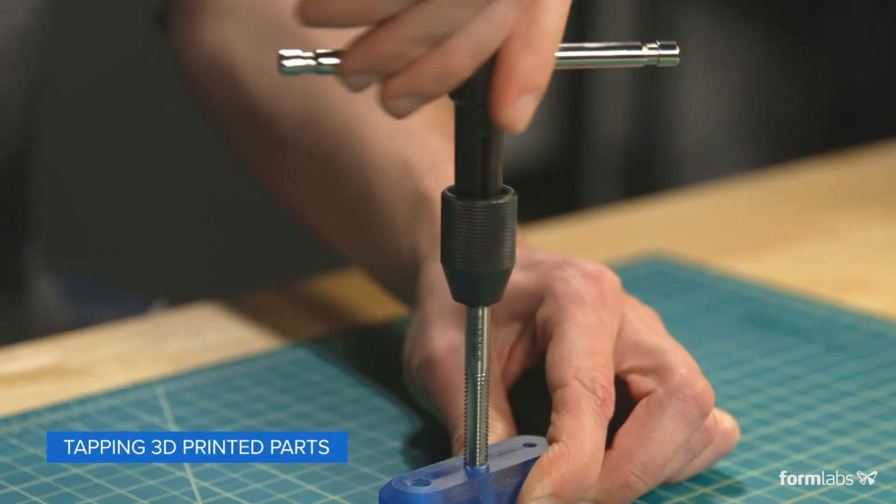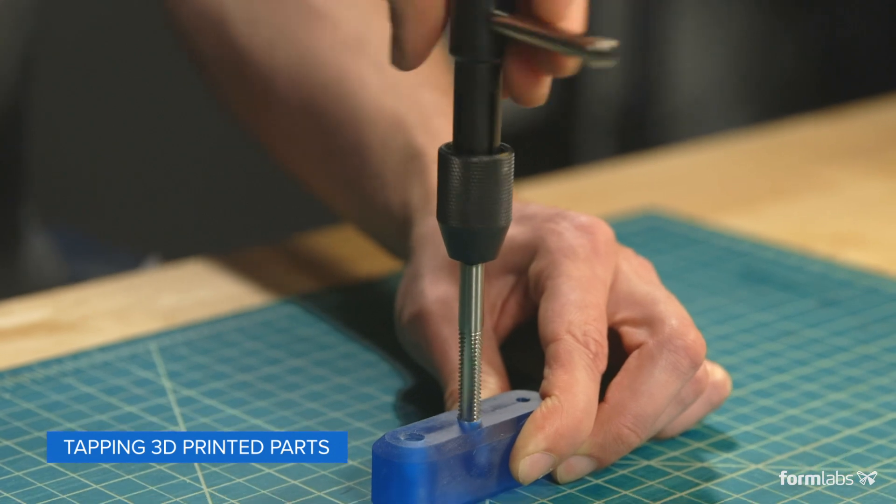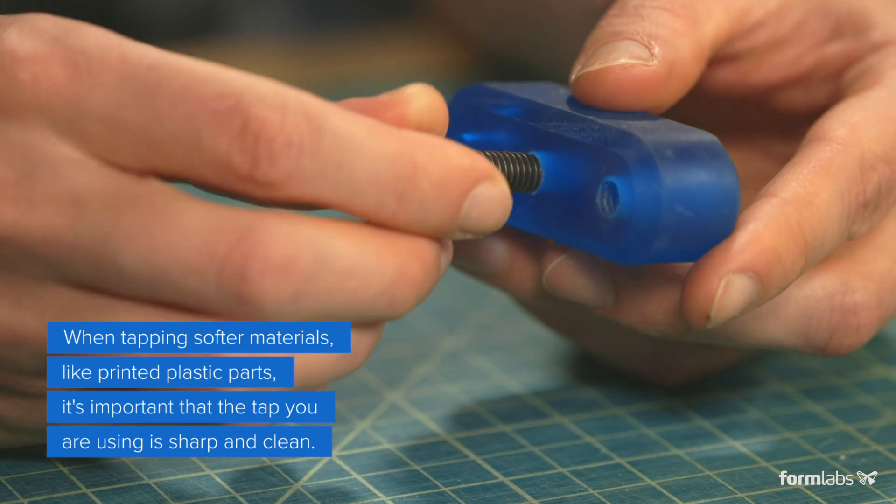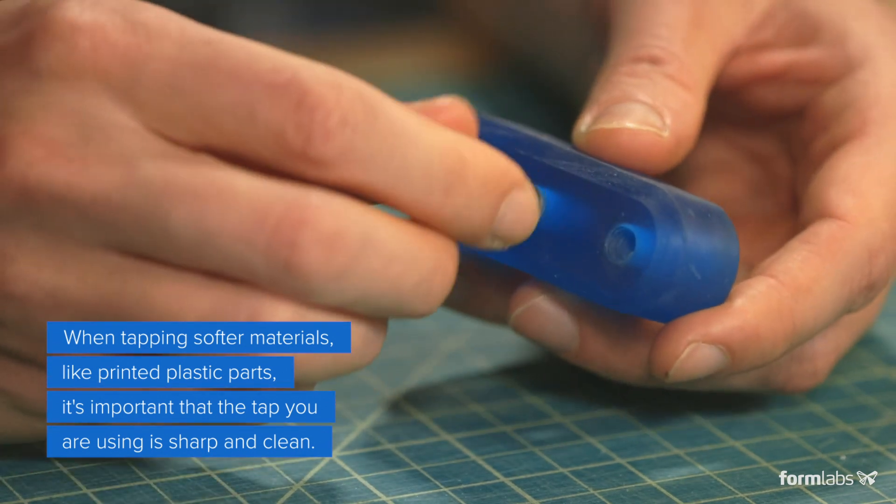Alternatively, you can use a tap to cut threads in printed parts. Cutting threads after printing will typically result in a cleaner thread profile but adds to total build time and requires additional tools.